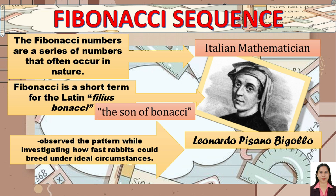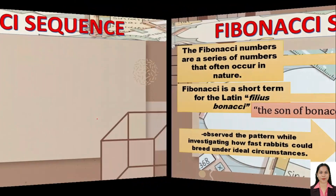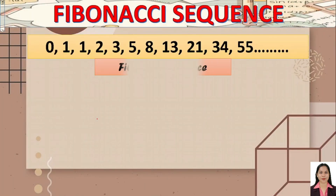He first observed the pattern while investigating how fast rabbits could breed under ideal circumstances. The series 0, 1, 1, 2, 3, 5, 8, 13, 21, 35, 55, and so on is what we call the Fibonacci sequence.